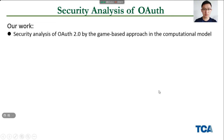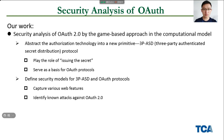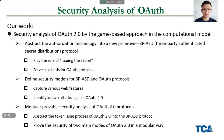In this work, we give a security analysis of OAuth 2.0 by the game-based approach in a computational model. We first abstract the authorization technology into a new primitive called the 3PSD protocol, which plays the role of issuing the secret and serves as a basis for OAuth. Then we define security models for 3PSD and OAuth protocols, which can capture various web features and identify known attacks against OAuth 2.0. Eventually, we conduct a modular analysis of OAuth 2.0 by abstracting the token issue process into the 3PSD protocol and proving the security of two main modes in a modular way.